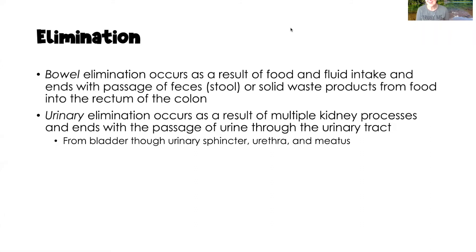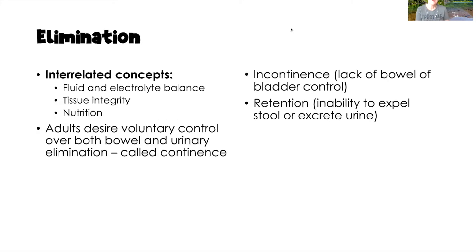As food and fluid flows through our GI tract, it's going to be absorbed from the small intestine into our bloodstream, and then anything that is waste is going to continue into the large intestine and be eliminated from the body through the rectum of the colon. Urinary elimination also occurs as a result of multiple kidney processes, ending with the passage of urine through the urinary tract. When we feel that urge to urinate, urine flows through the urinary sphincter, the urethra, and finally out the meatus.